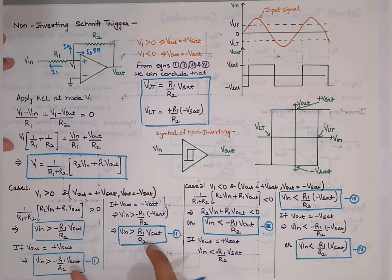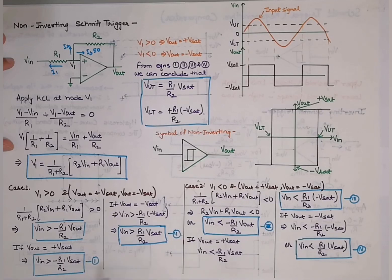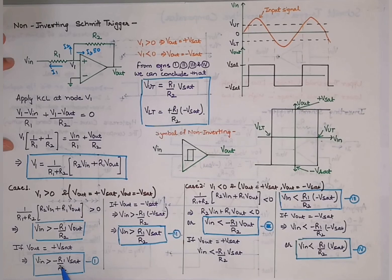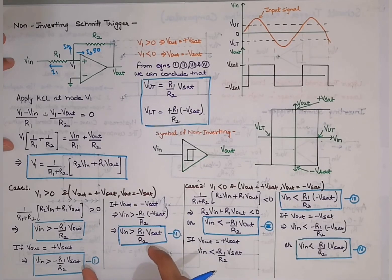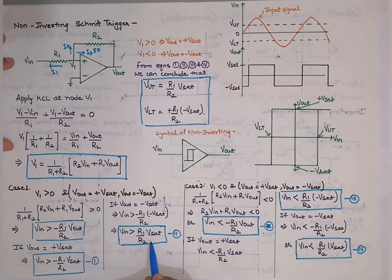These two equations point toward two threshold values: one with negative polarity and one with positive polarity. The positive polarity is considered the upper threshold and the negative polarity is considered the lower threshold.